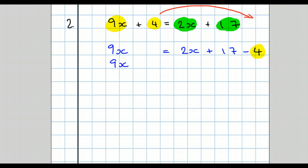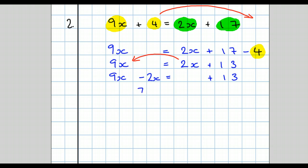Next line of working, we simplify the right-hand side: 9x equals 2x plus 17 take away 4, which is the same as plus 13. Next, we get all the letters together. There's no minus sign in front, so we're going to take away 2x, giving us 9x take away 2x equals plus 13. Simplify: 9x take away 2x is 7x, so 7x equals plus 13. The coefficient is 7, so x equals plus 13 all over 7.